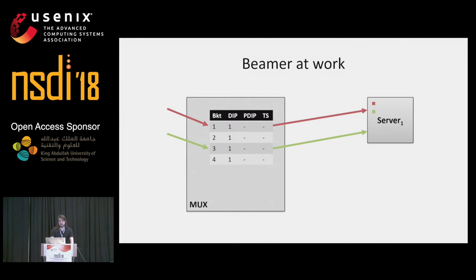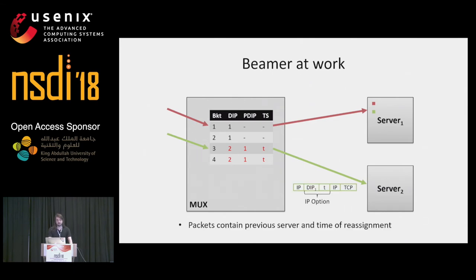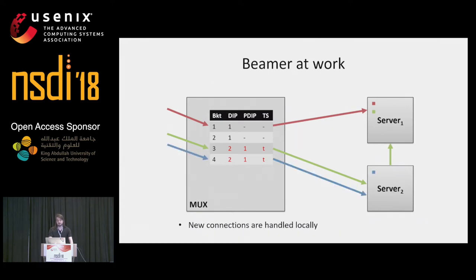When we add another server, for good load balancing we reassign half the buckets to server two — in this case buckets three and four. The green flow hits bucket three and gets reassigned to server two. Server two does not have any connection state for the green flow. However, all packets load balanced by Beamer also contain the previous server along with the timestamp of the reassignment. So server two knows that server one probably has state for the green flow and forwards the packets over. New connections are serviced locally while waiting for daisy chain connections to die off.